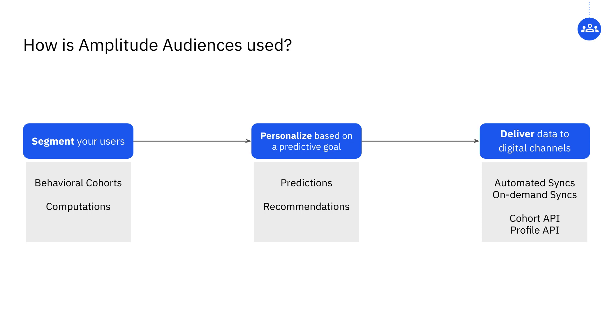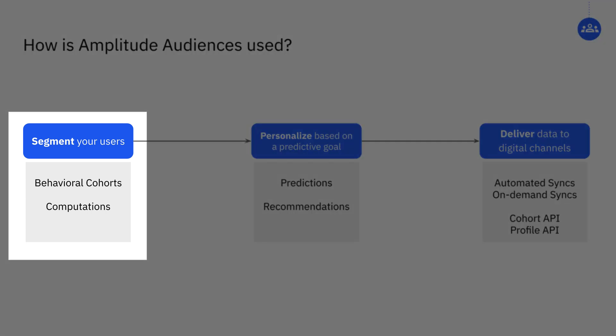There are two key ways you can create audiences: by using behavioral cohorts and computations. Behavioral cohorts let you create behavior-based audiences. You can create behavioral cohorts in a number of different ways, including from the cohort's definition page in Amplitude Audiences, or the cohort's definition page in Amplitude Analytics. Both of these pages look and function in exactly the same way.